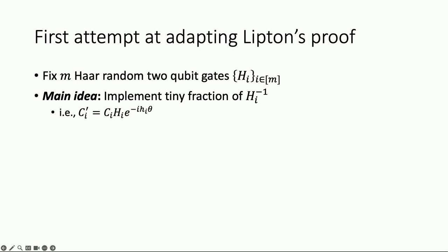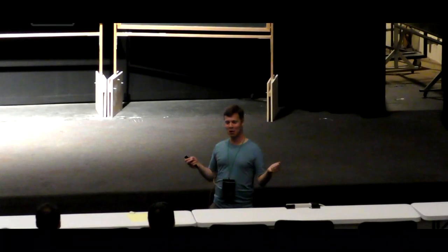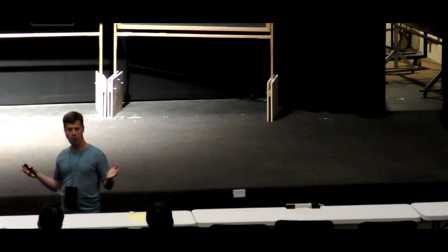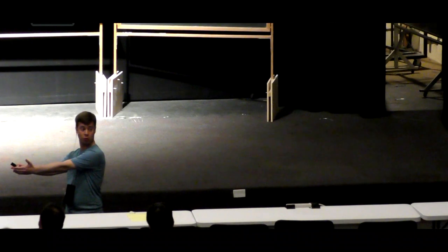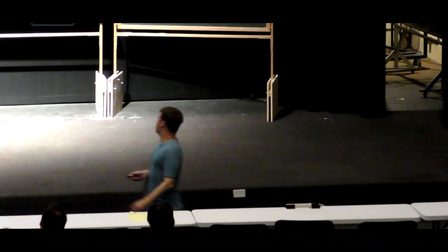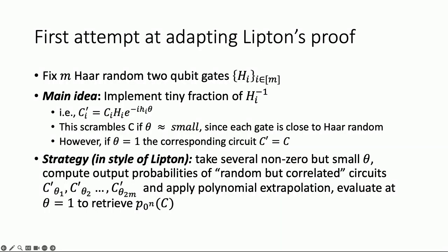So the strategy is very similar to Lipton's: take a whole bunch of thetas all close to zero, do polynomial extrapolation, then evaluate the polynomial at θ=1. We take several non-zero but small thetas, compute the output probability of the random but correlated circuits C'(θ₁), C'(θ₂), etc. — around 2m of them, because that's the degree. These are called 'random but correlated circuits': individually they look random, but they're correlated because they all use the same H_i's.